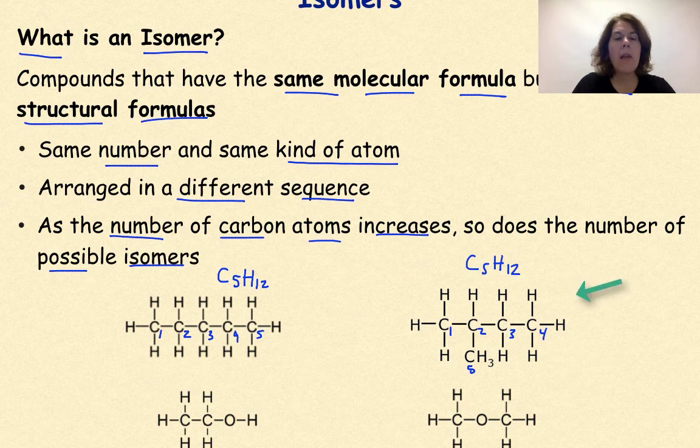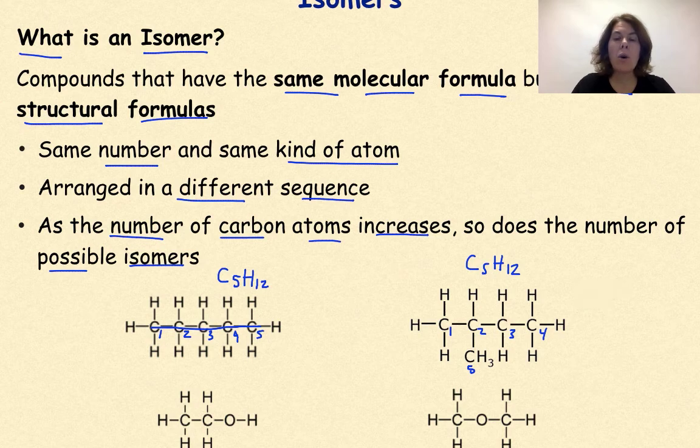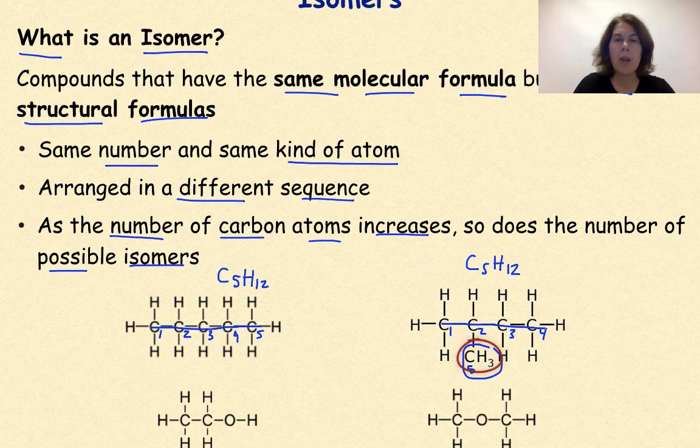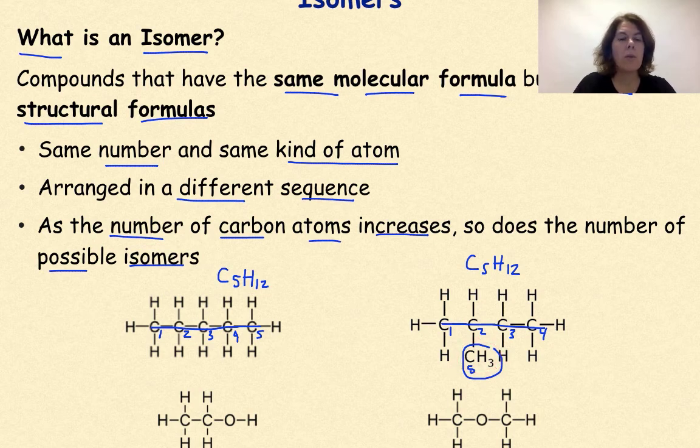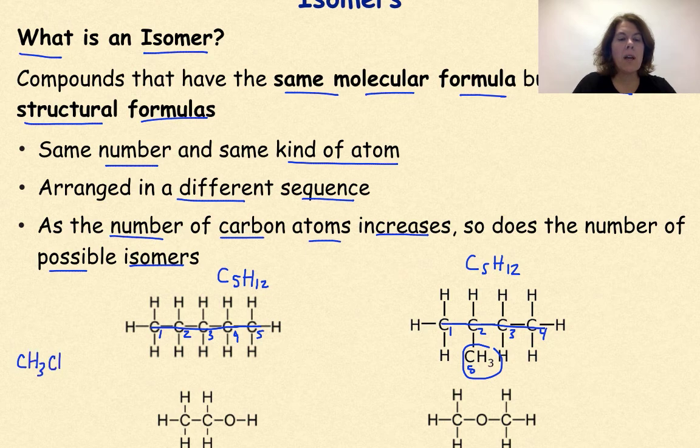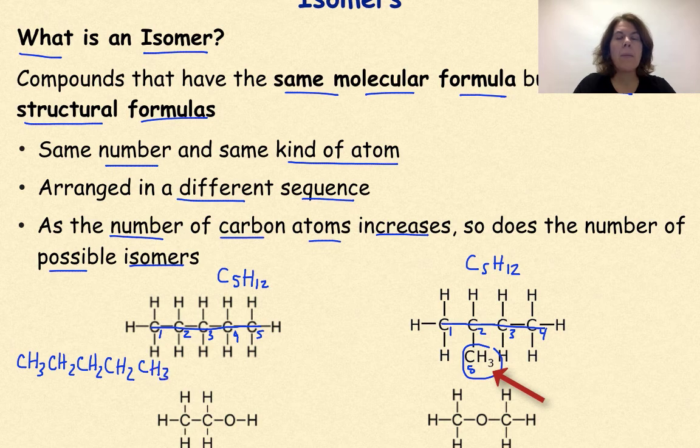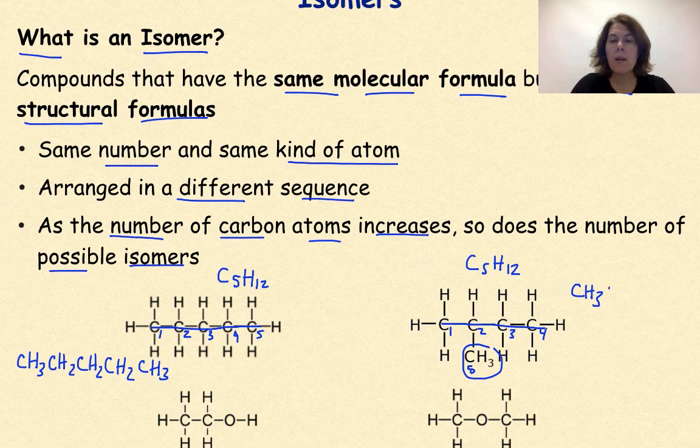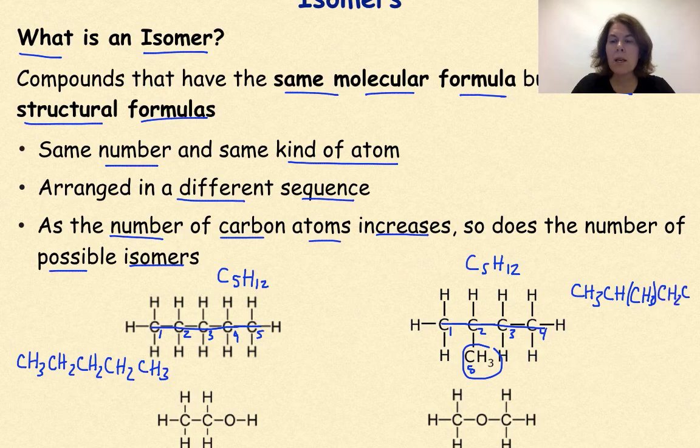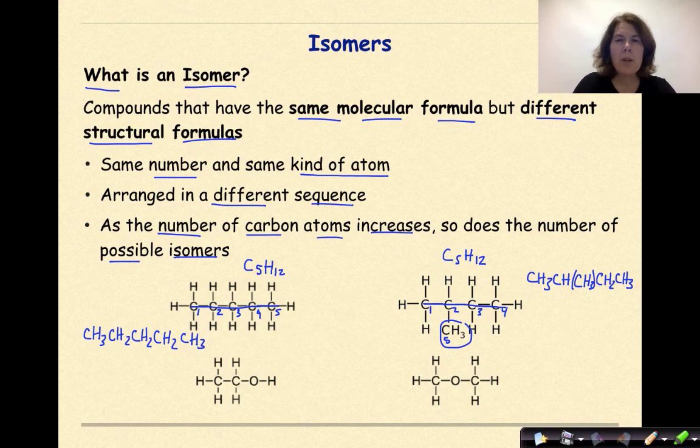The key thing here is that this molecule over on the left is a straight-chained hydrocarbon. The molecule over on the right is a straight-chained hydrocarbon, but it also includes a branch. So if we were to write the condensed structural formulas of these, they would look different. For my molecule over on the left, the condensed structural formula would be CH3, CH2, CH2, CH2, and then again CH3. My molecule over on the right has a branch, so the condensed structural formula is going to be slightly different. It is going to be CH3, CH, and then I'm going to include the branch in parentheses, CH3, CH2, CH3. So again, these are isomers of each other because they have the same molecular formula, but they are definitely different structural formulas.